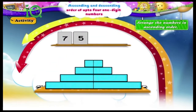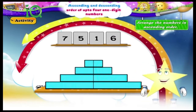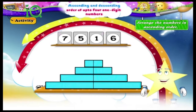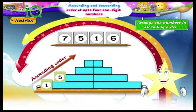Seven, five, one, six. In this set, Starry, the smallest number is one. The biggest number is seven. And between five and six, five is the smaller number. The numbers in ascending order are one, five, six, seven.